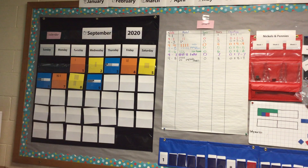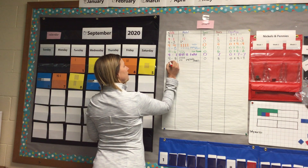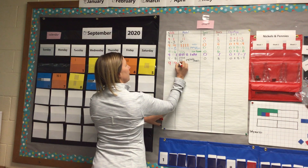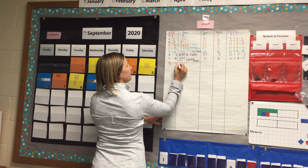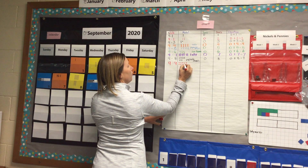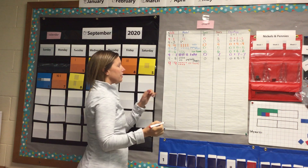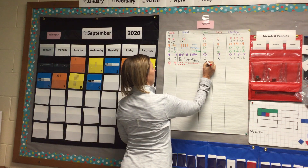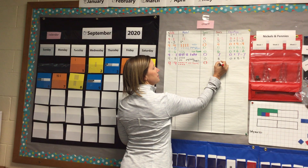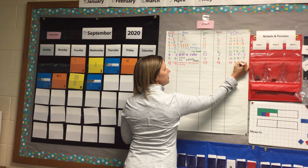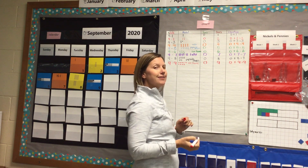So let's write that on our chart here. Nine dash nine. And we had a 10 frame that was five on top and four on the bottom. When we look at the number nine, there are still no 10s in the number nine. So we have zero 10s, but we have nine ones. And an equation we could write following our pattern is zero plus nine equals nine.